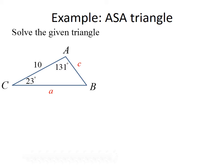Let's solve an angle-side-angle triangle where side b equals 10, angle C is 23 degrees, and angle A is 131 degrees. Since we already know angles A and C, we first find angle B. The three angles must add up to 180 degrees, so angle B equals 180 minus 131 minus 23, which gives us 26 degrees.